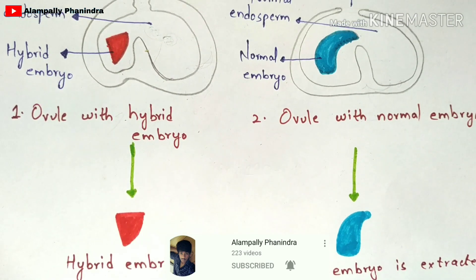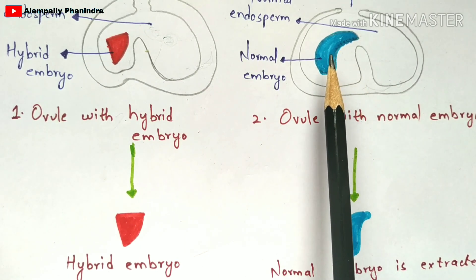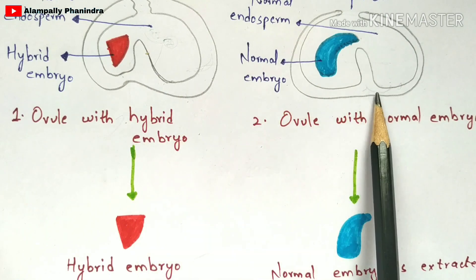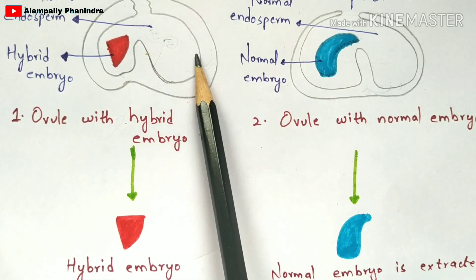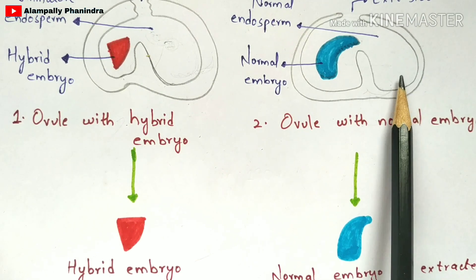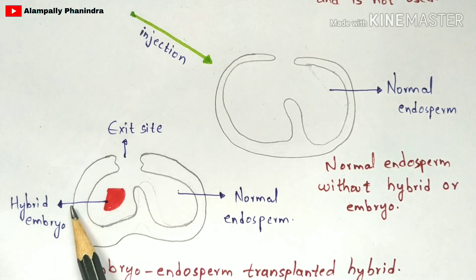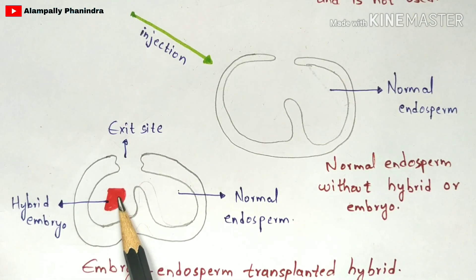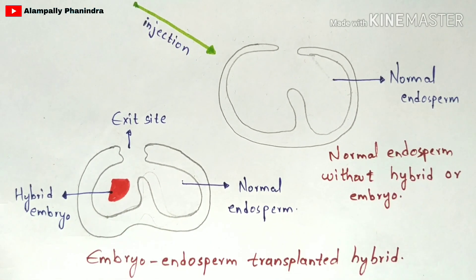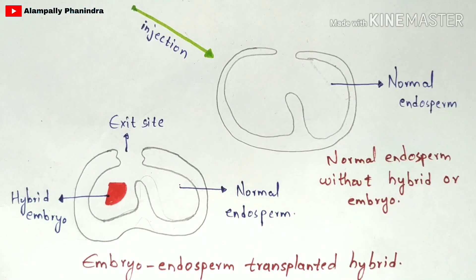In summary: the hybrid embryo is isolated from the first ovule with immature endosperm, and the normal embryo is isolated from the second ovule and set aside. The hybrid embryo is then injected into the normal endosperm ovule via the exit site. The resulting structure — a normal endosperm with a transplanted hybrid embryo — is called an embryo-endosperm transplanted hybrid, and the process is called embryo-endosperm transplantation.